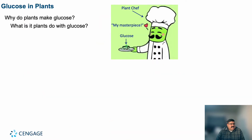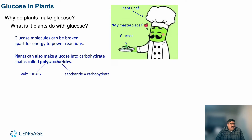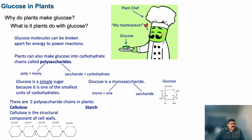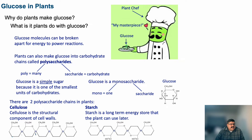Why do plants make glucose? Glucose molecules can be broken apart for energy to power reactions. Plants can also make glucose into carbohydrate chains called polysaccharides — poly meaning many, saccharides meaning carbohydrates. Glucose is a simple sugar and the smallest unit of a carbohydrate — a monosaccharide. There are two polysaccharides in plants: cellulose, which is a component of the cell wall, and starch, a long-term energy store. They are isomers of each other — in cellulose all the CH2OH groups are on the same side, while in starch they alternate.